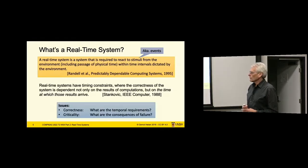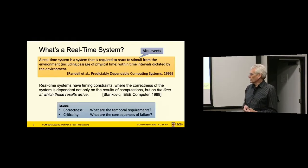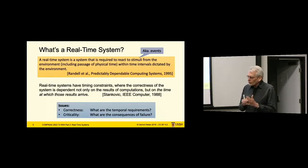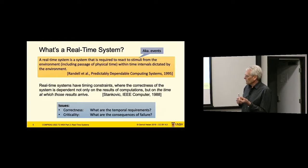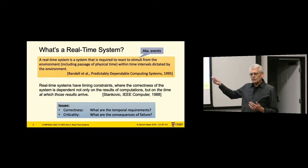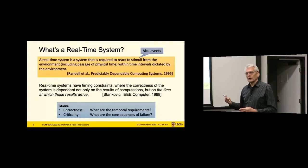Energy budgets are more important when you have a fixed amount of energy, like a battery-driven device. These are non-functional properties just as timeliness. So the issues become, on one side, correctness — the system meeting its temporal requirements. And the other orthogonal issue is criticality: what happens if correctness fails, like we don't deliver on time. In mixed criticality systems, which we'll talk about at the end, the two aspects are orthogonal.